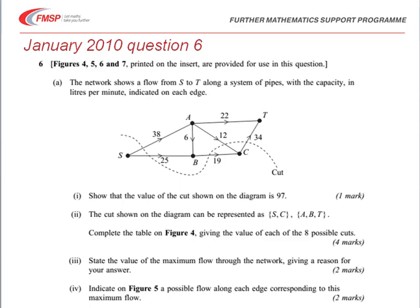This question concerns network flows. The question starts off by saying we have a diagram showing the flow from S to T, with the capacities of each of the pipes shown on the diagram. We're asked first to find the value of the cut shown by the dotted line. The cut on the diagram can be represented by two sets: the source set S and C on the left side of the cut, and the sink set A, B and T.